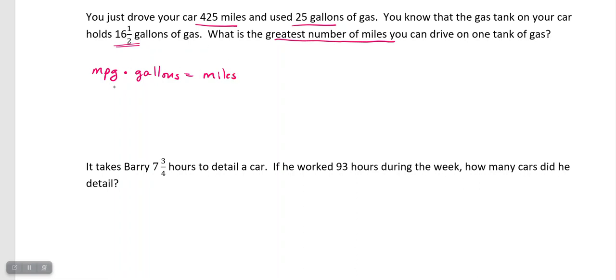First thing I have to do is determine what is my miles per gallon. And so it told me miles per gallon, my miles over my gallons. So 425 miles and 25 gallons gives me 17 miles per gallon. So if I take 425 divided by 25, that gives me 17 miles per gallon.